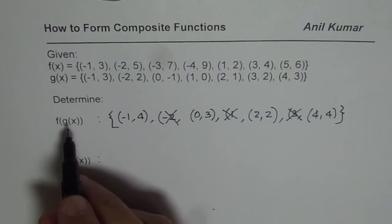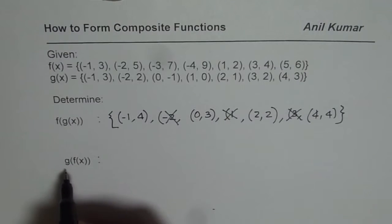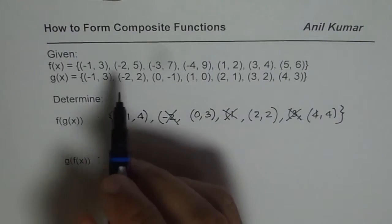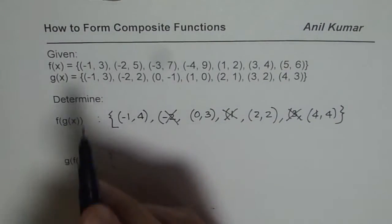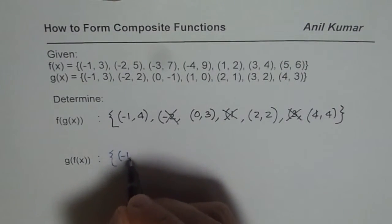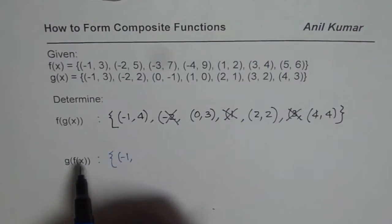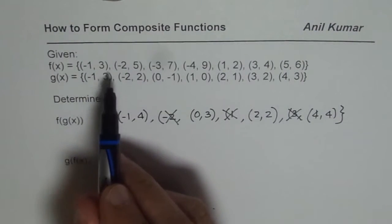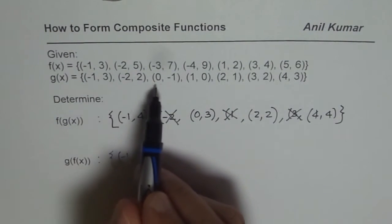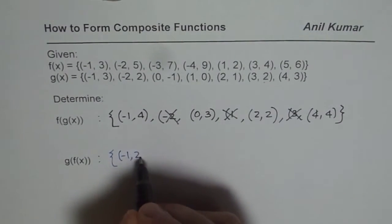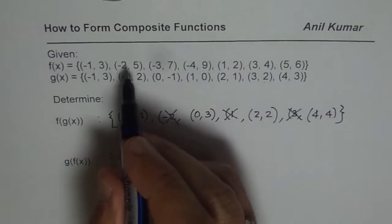Now let's do a similar operation, but this time g of f of x. We begin with f of x now. For input value minus 1, the output for f of x is 3. Then g of 3 is 2, so 2 becomes the output.